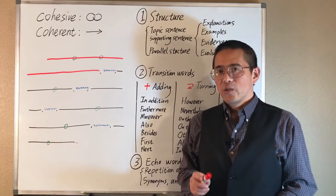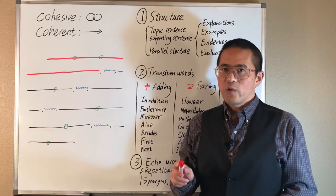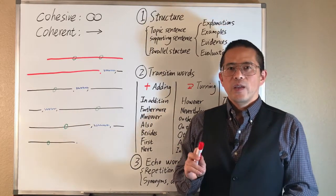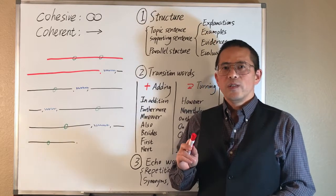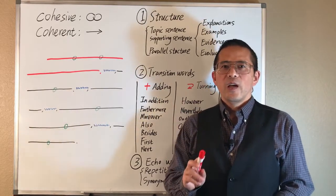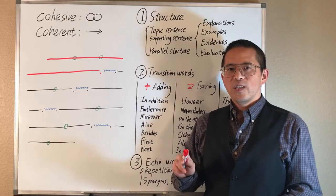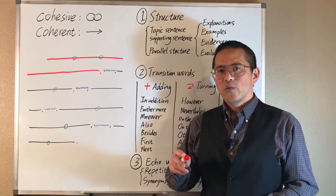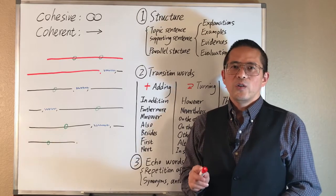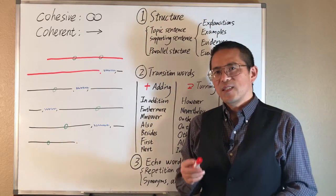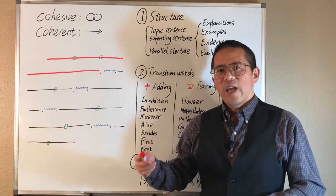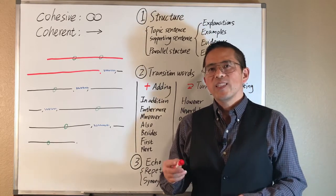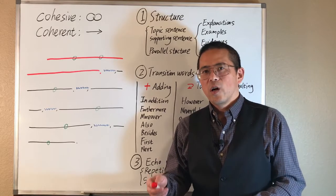To develop a coherent article, first, we need to establish a clear structure, including introduction, conclusion, and body paragraphs. In a paragraph, every sentence should serve the topic sentence. In an article, every paragraph should serve the thesis statement. To make a paragraph coherent, we use transition words between sentences. To make an article coherent, we can use transition sentences at the beginning and at the end of paragraphs. And finally, we should be consistent in the terminologies we use throughout the whole article.